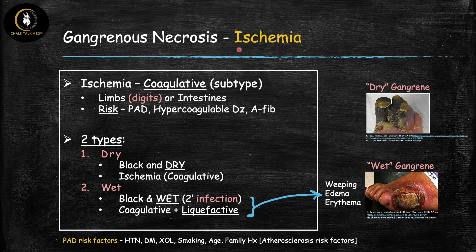The most common cause of gangrenous necrosis is ischemia — you'll see this nine times out of ten. The most common necrosis associated with ischemia is coagulative necrosis: essentially anywhere in the body except the brain it's coagulative necrosis, and in the brain it's liquefactive necrosis — that is very high yield. Gangrenous necrosis is actually a subtype of coagulative necrosis, caused by ischemia specifically in the limbs, particularly the digits (fingers and toes) and the intestines. This tissue looks black, confirming it as a subtype of coagulative necrosis.